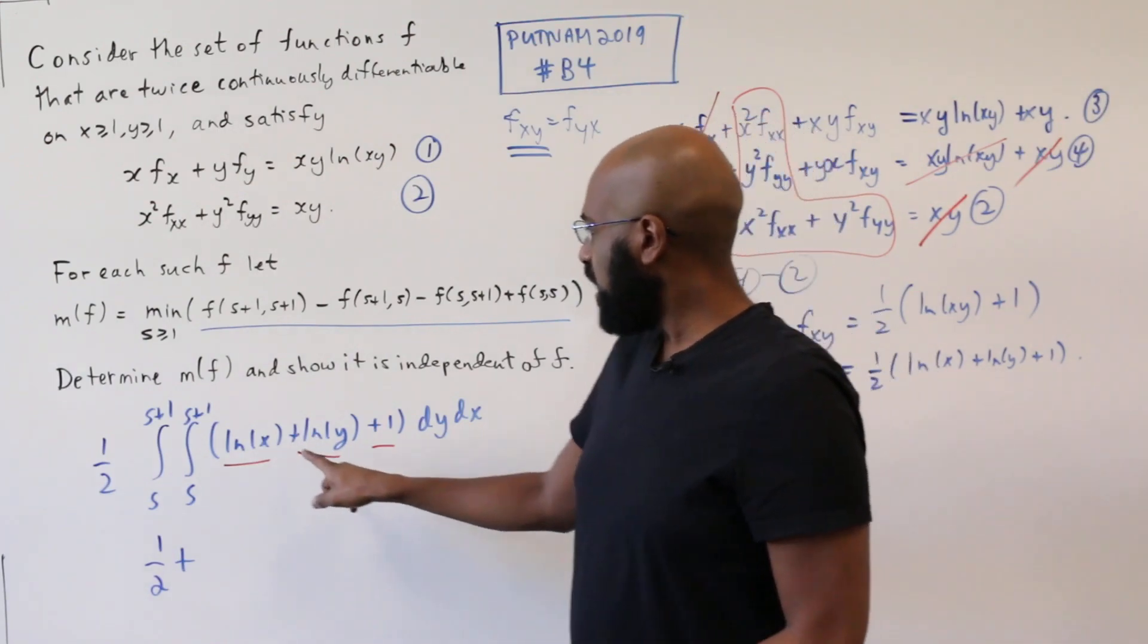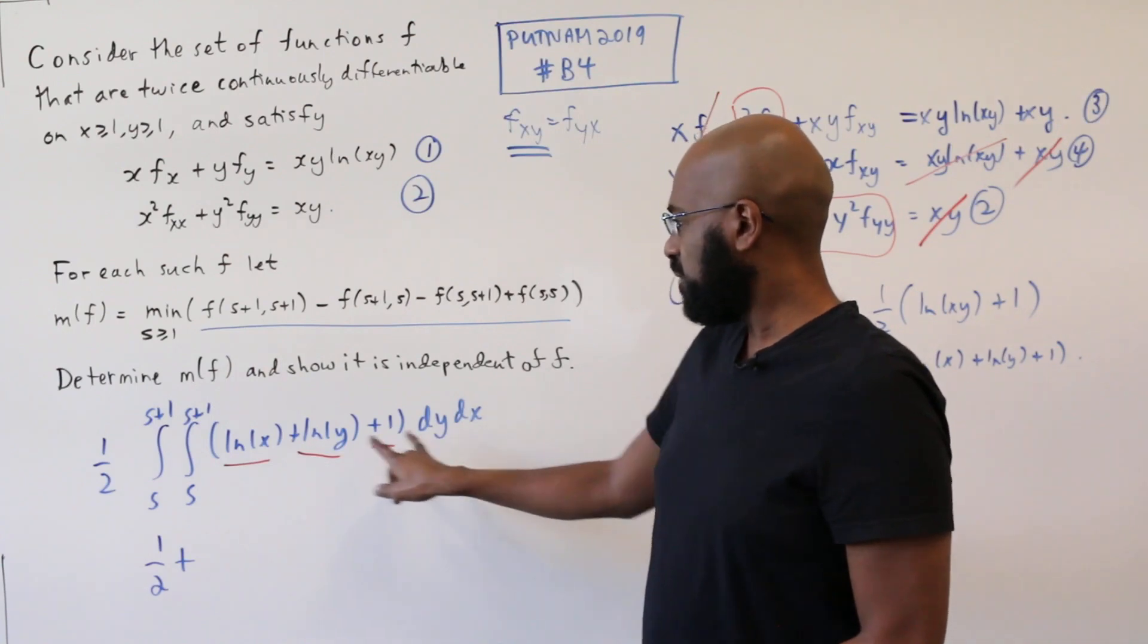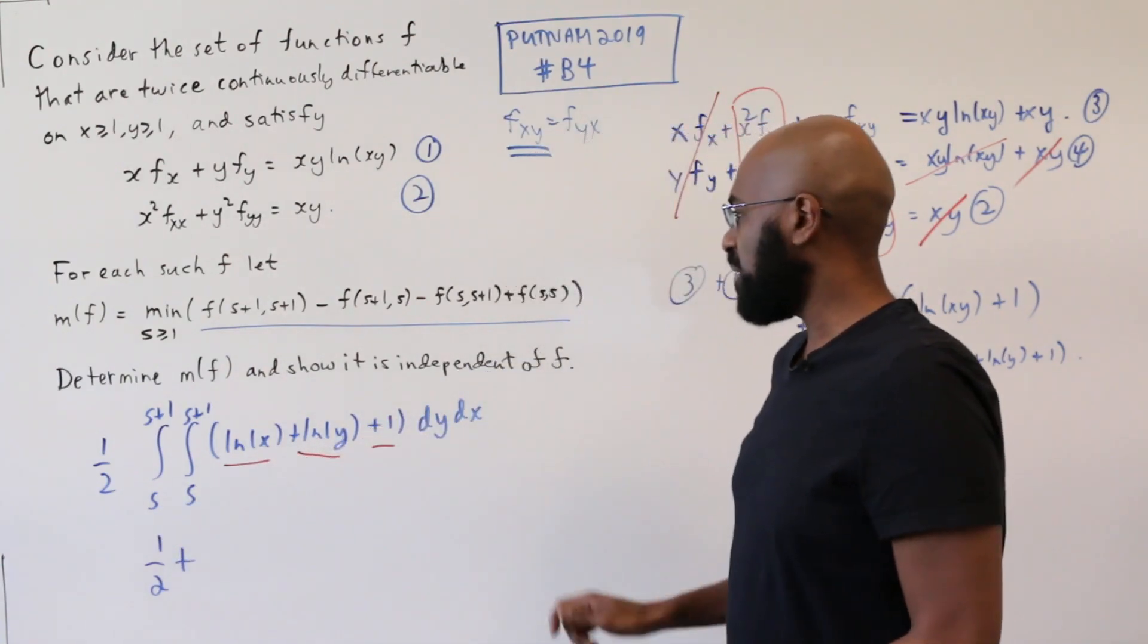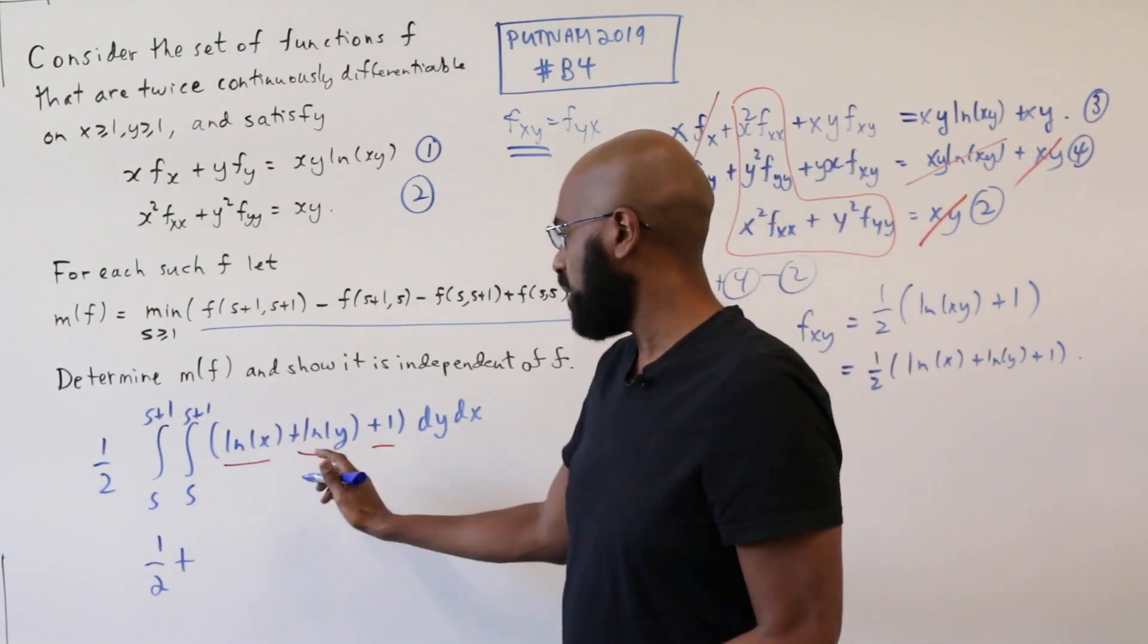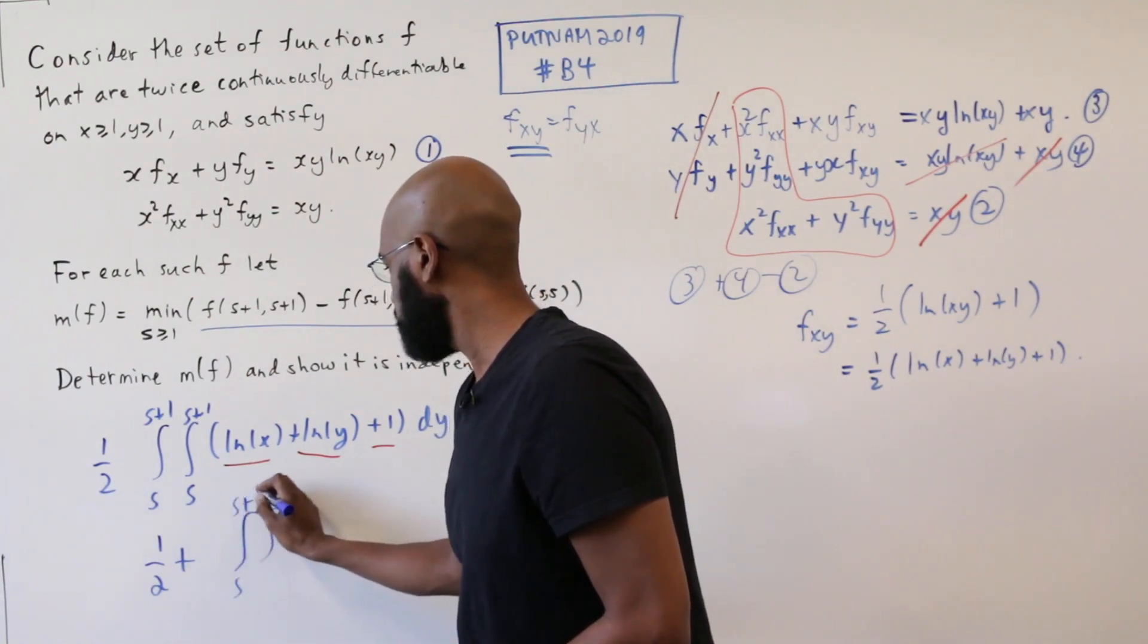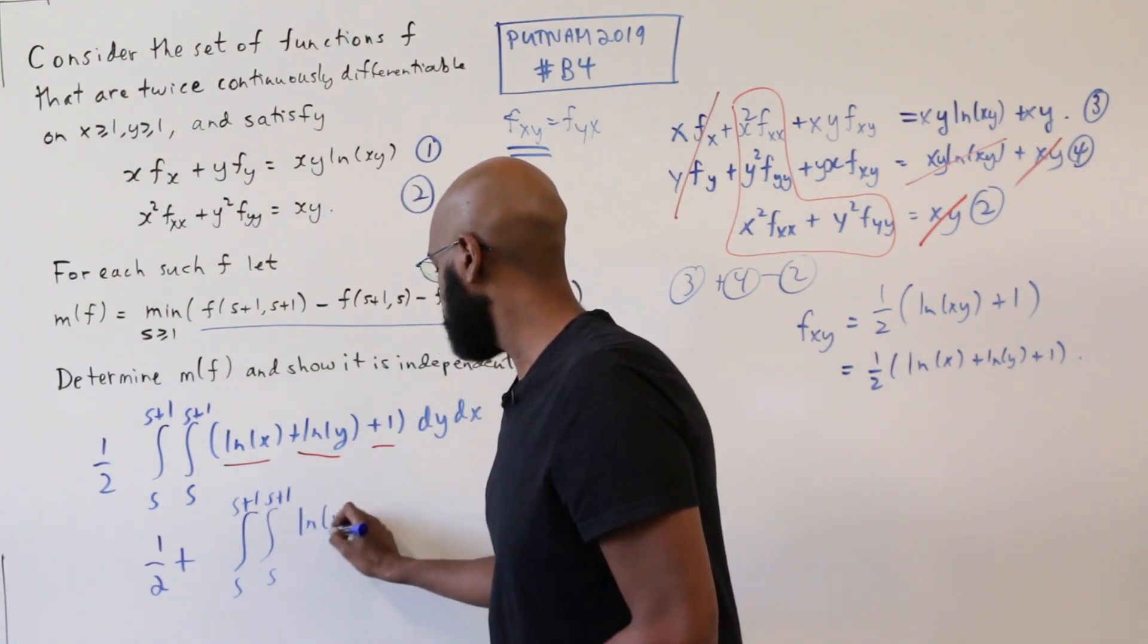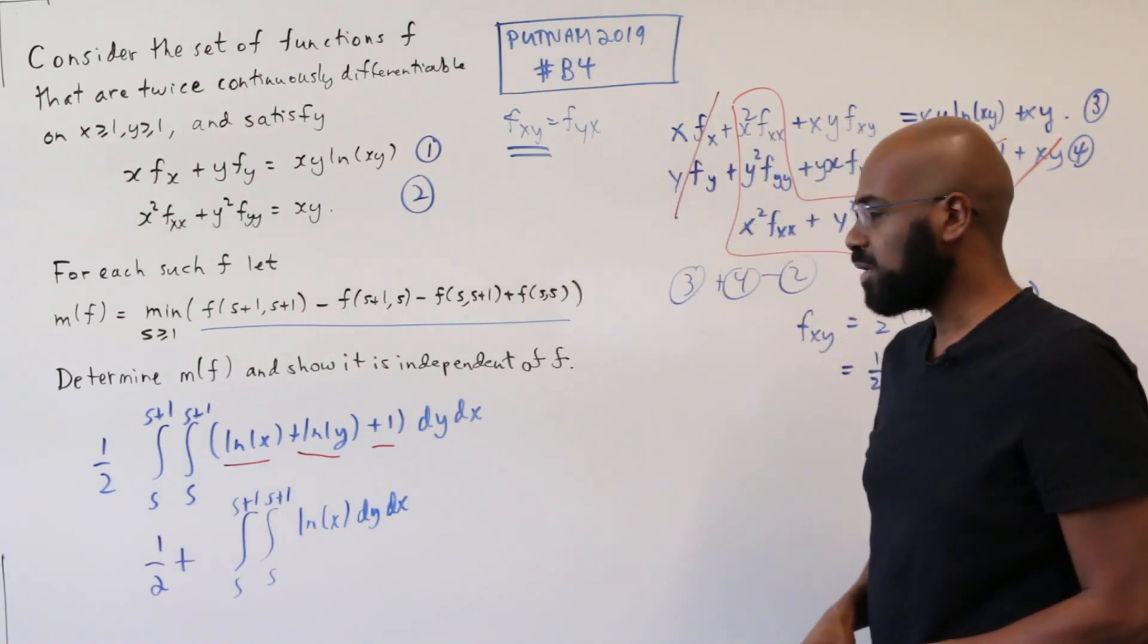And then we have the integral of ln of x over this region and ln of y over this region. And by the symmetry of this interval, that's twice the integral of just one of them. And since we have this half, we can eliminate it and say this is the integral from s to s plus 1 of ln of x dy dx.